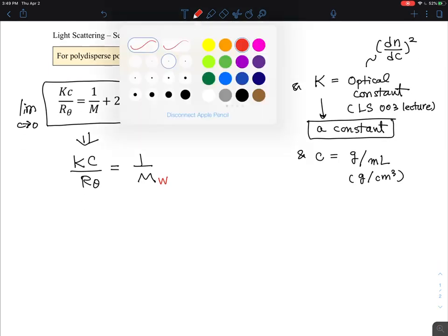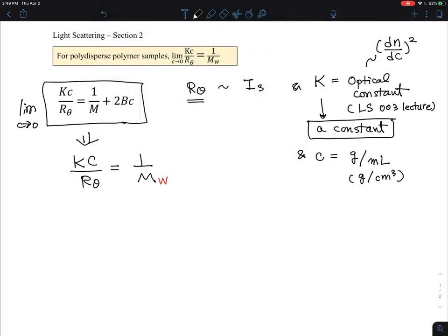Let me rearrange this equation. The scattered light intensity is related to Rθ, and Rθ is essentially the constant K times concentration c times the molecular weight. For the polydisperse sample, this is essentially the summation of all the i-mers having their mass per volume and their molecular weight corresponding to the i-mers.